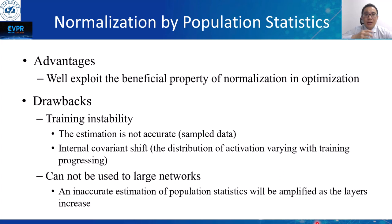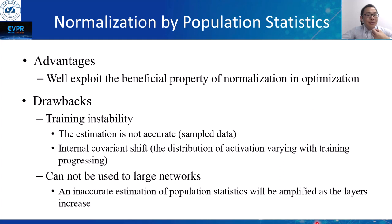Methods proposed by Desjardins et al. and others propose to whiten the activation using population statistics of the whitening matrix. These methods pioneer the way to normalize activations while exploiting the beneficial properties of normalization in optimization. However, there are also subsequent drawbacks. The main disadvantage is instability: because the estimation is not accurate, these methods usually use summed data for the forward pass to estimate parameters. The key reason for this instability is the internal covariance shift problem — even with an accurate estimate in the current iteration, the distribution changes during optimization, so the estimation becomes inaccurate and the inaccuracy amplifies with the number of layers.